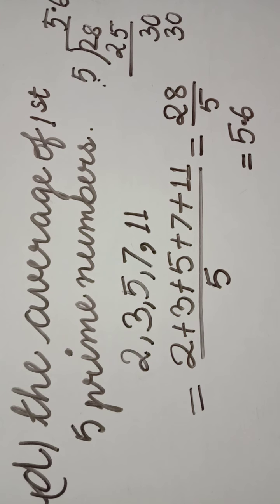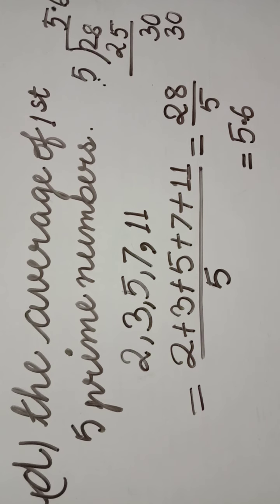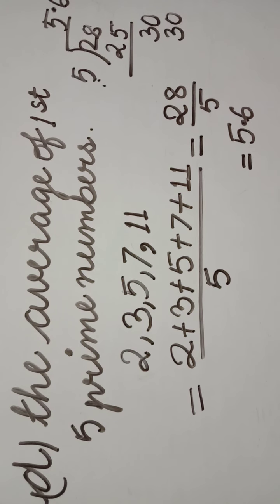This is how we can find the average of a given set of data. If the data is given, we can find the average by adding the numbers and dividing the sum by the number of addends. Hope you have understood the video well. Thank you.